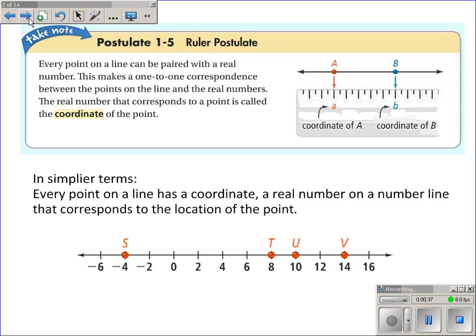We're starting off with a postulate, which again is an accepted statement of fact, and that is the ruler postulate. The ruler postulate is that every point on a line can be paired with a real number. This makes a one-to-one correspondence between the points on the line and the real numbers. So in simpler terms, every point on a line has a coordinate, some real number that corresponds with that point.